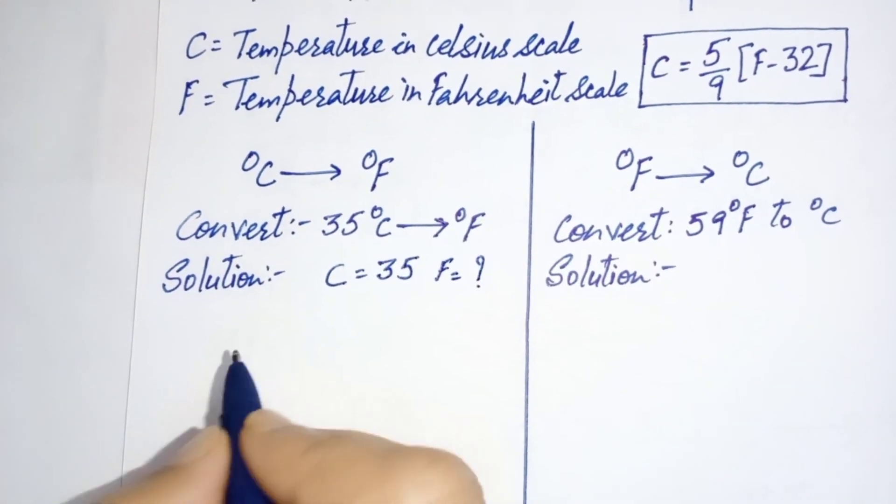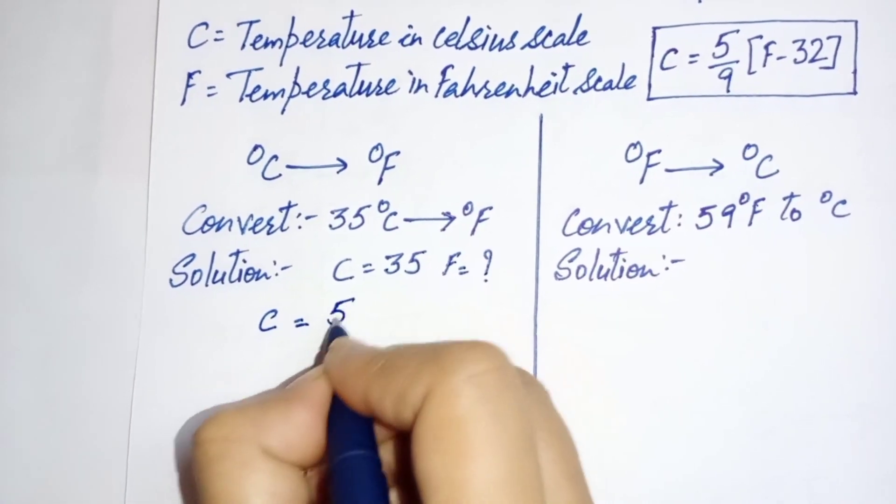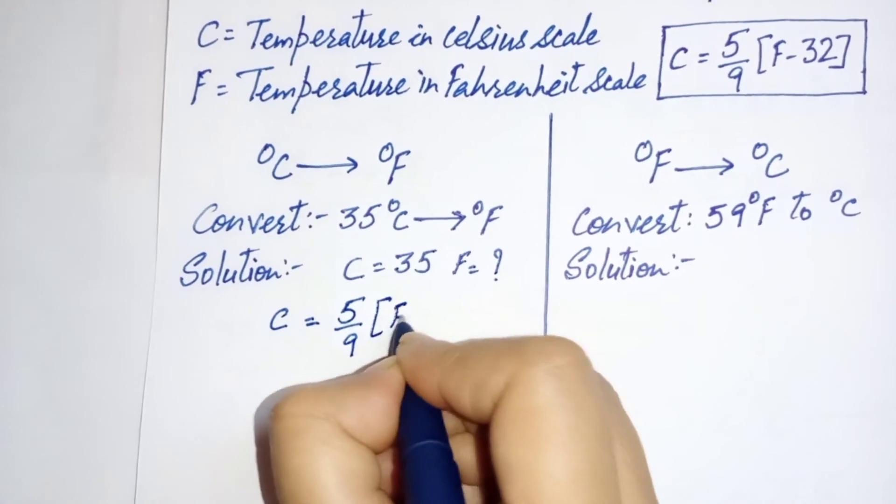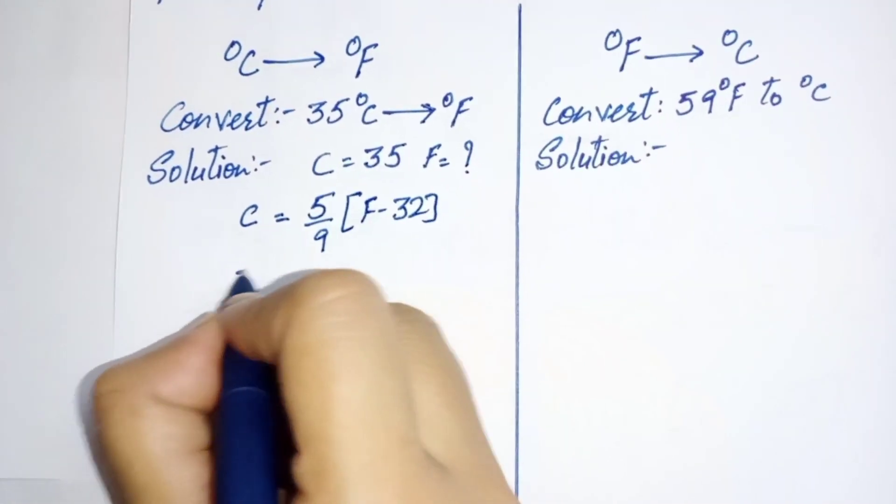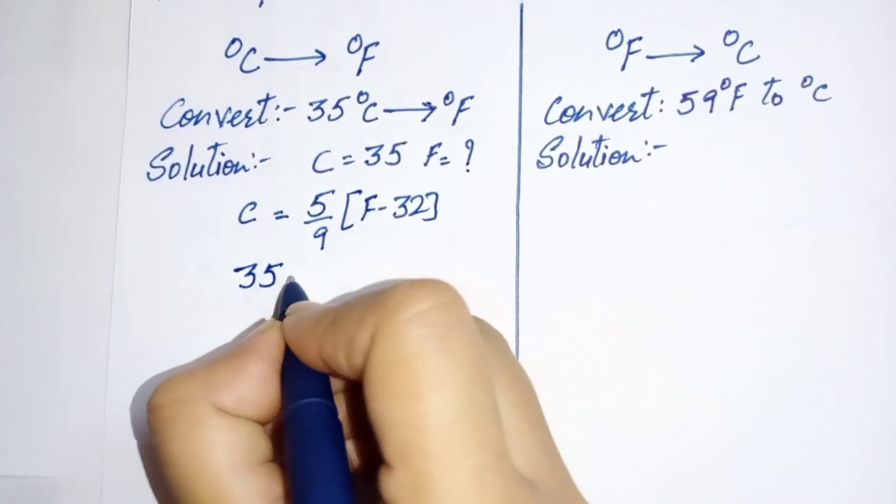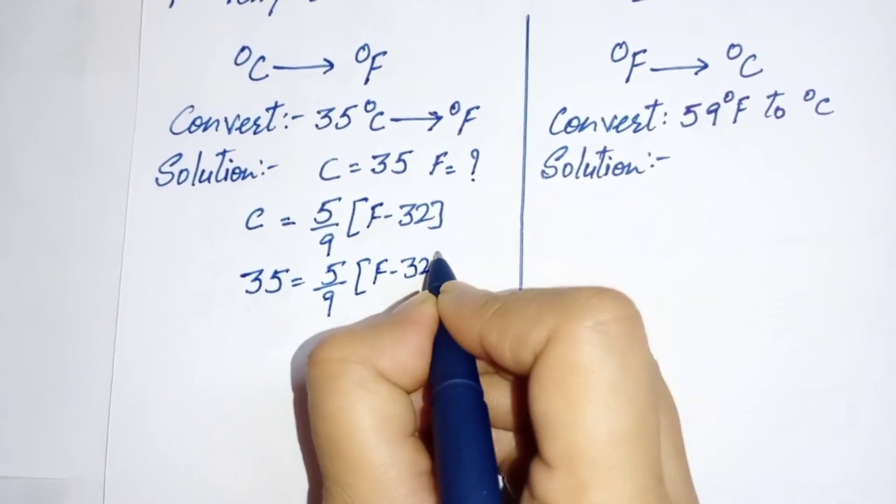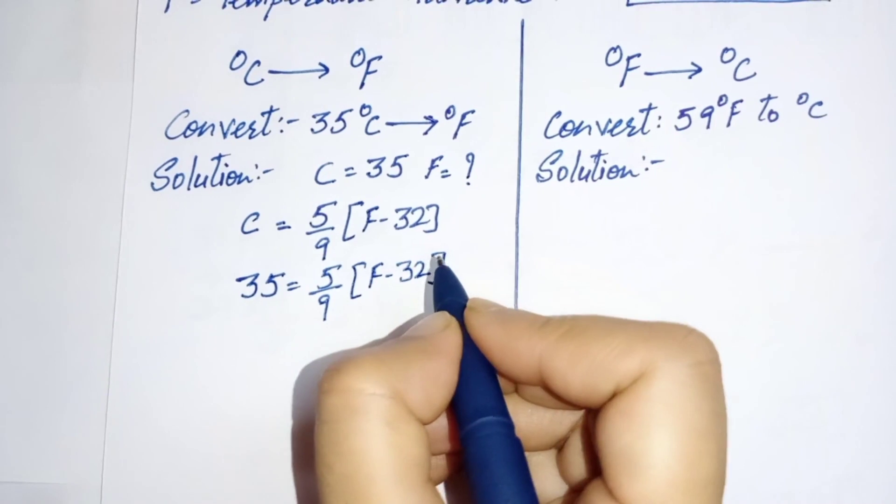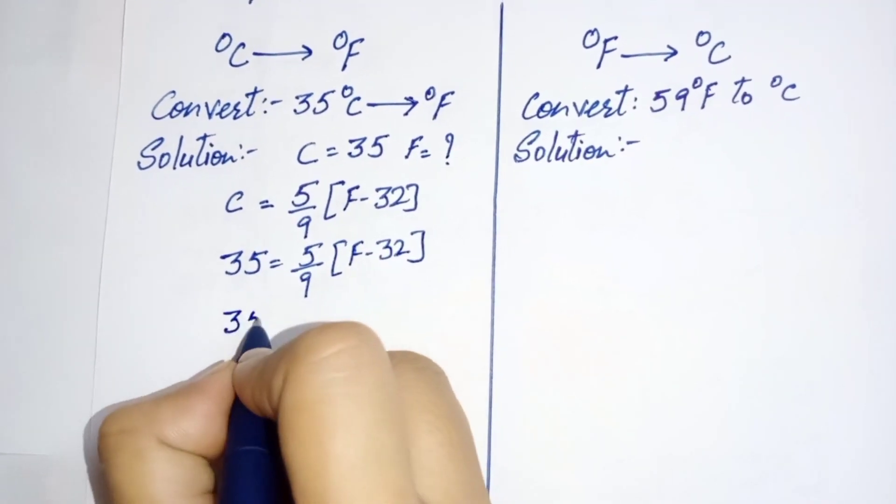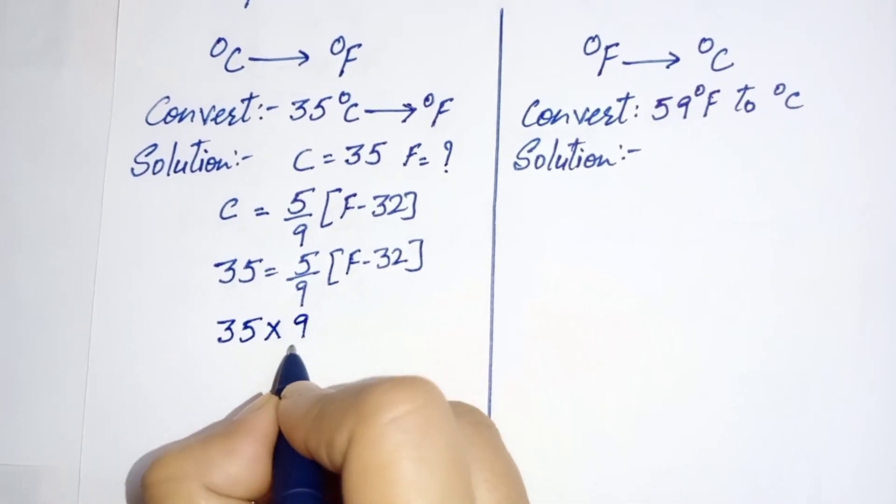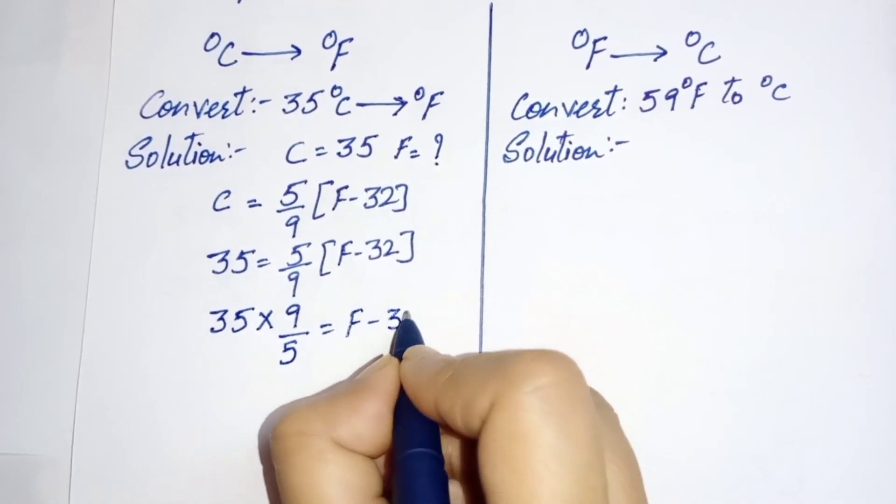Now putting the value of C in the equation, value of C is 35, 5 over 9 F minus 32. By cross multiplication, 35 into 9 over 5 is equal to F minus 32.